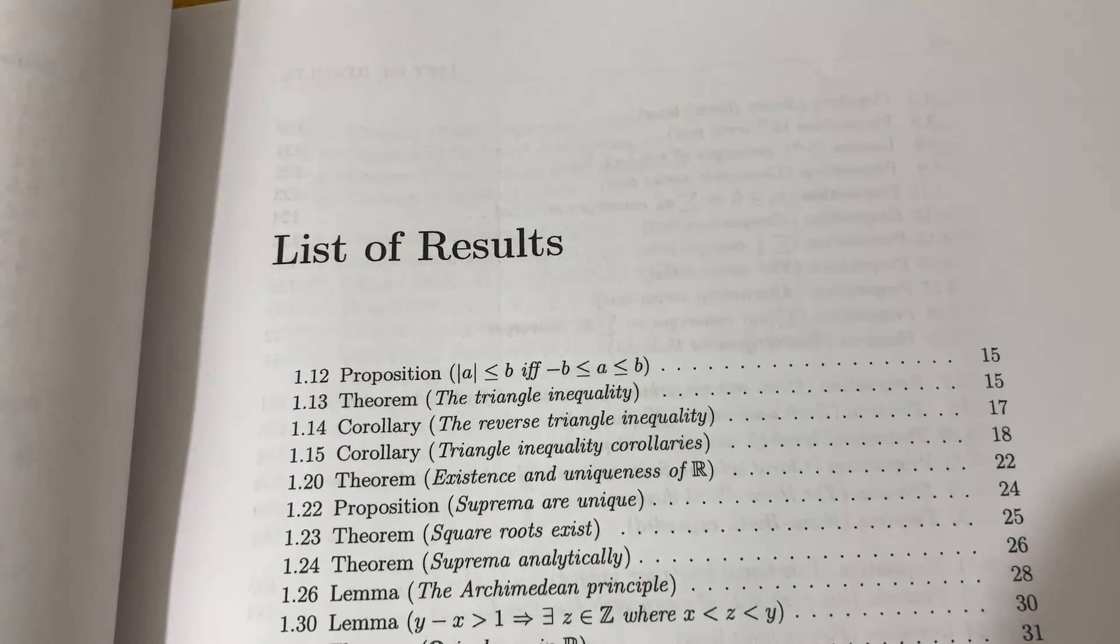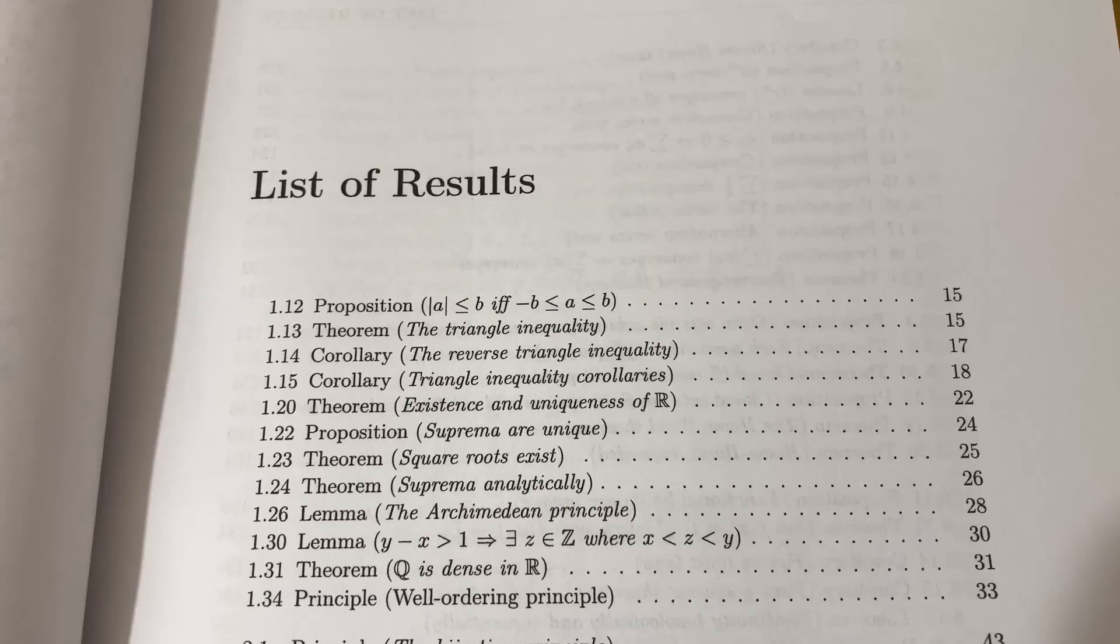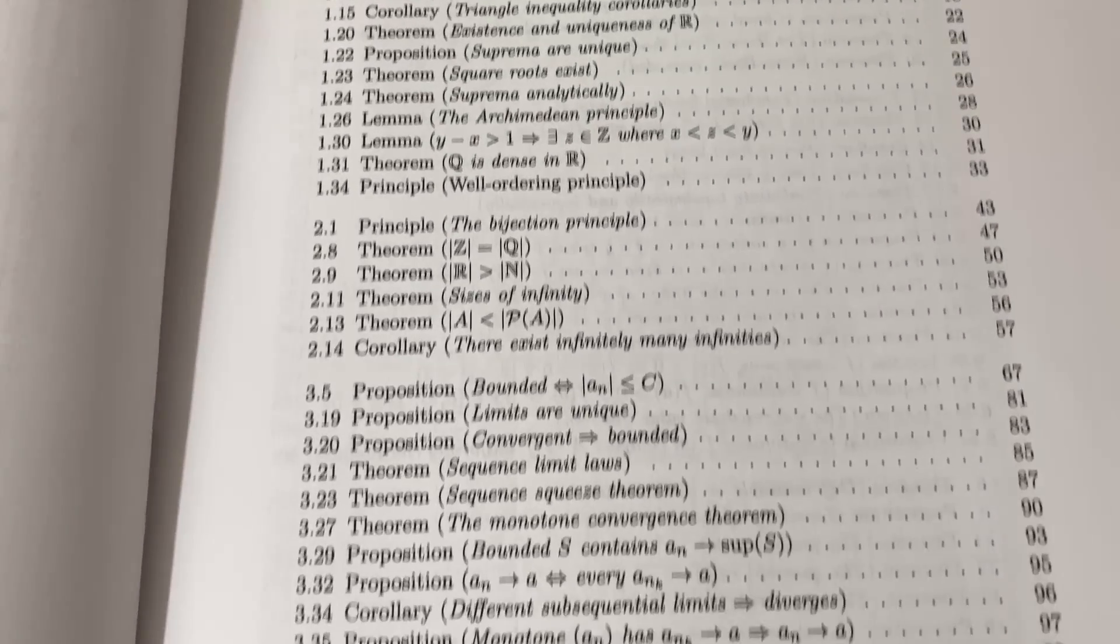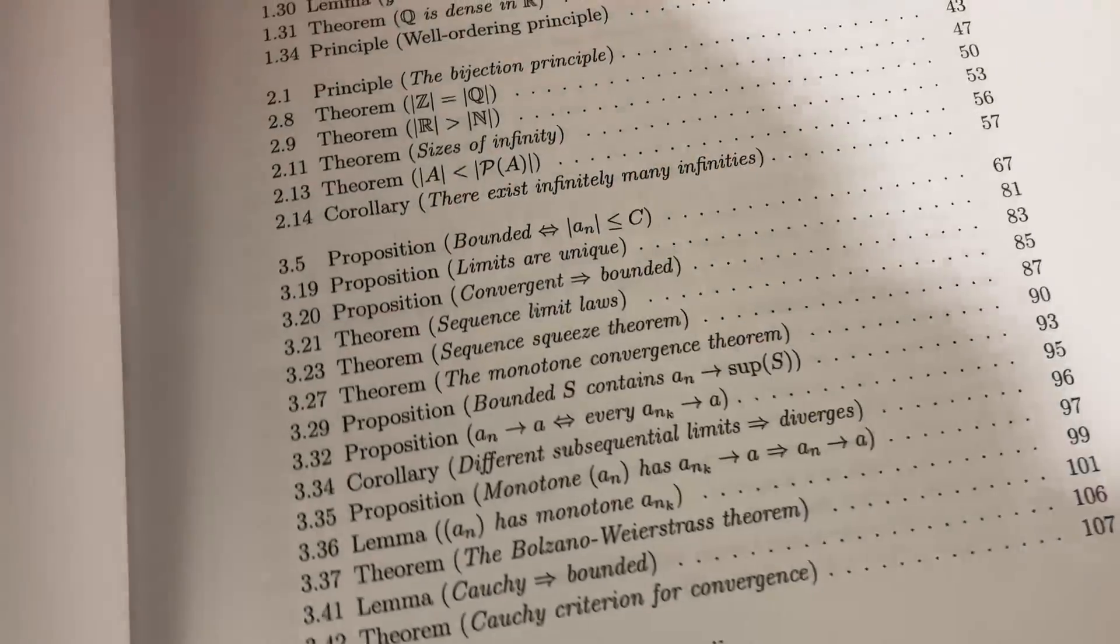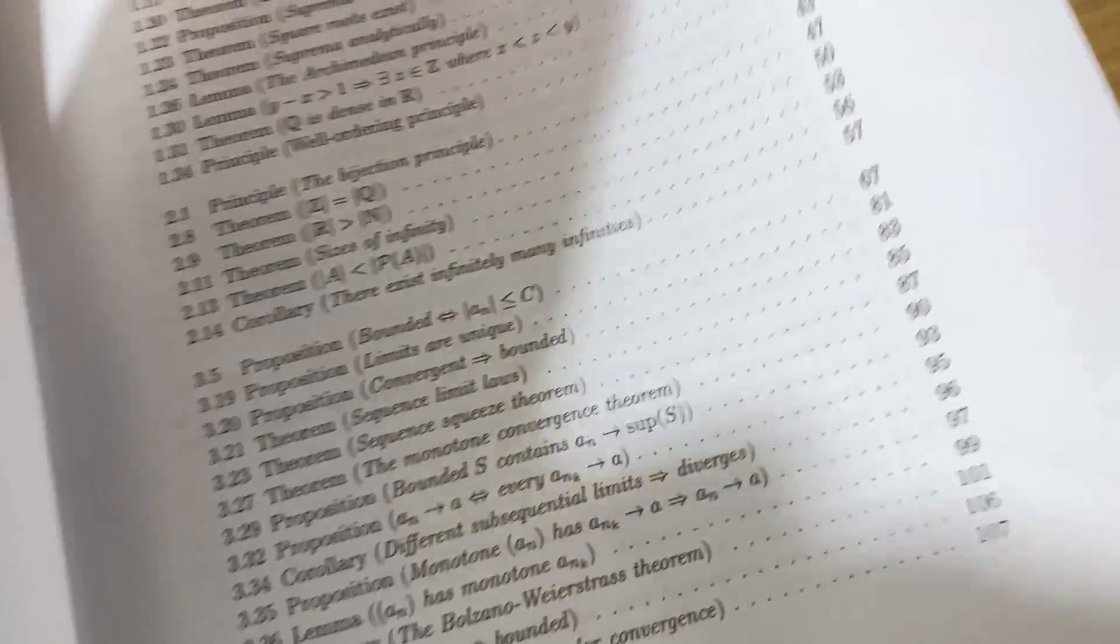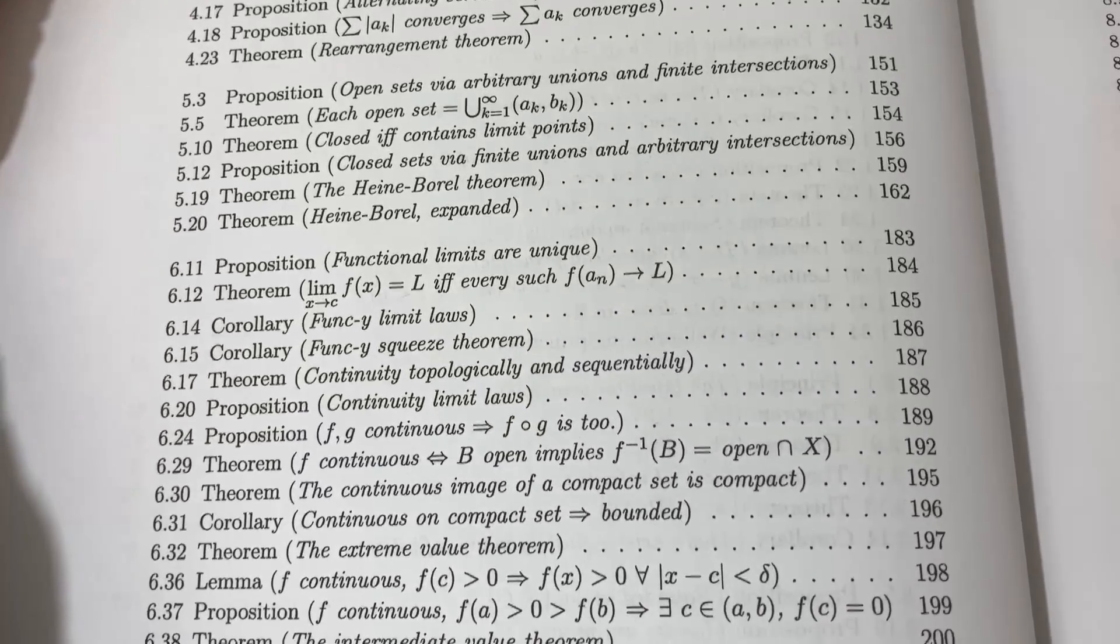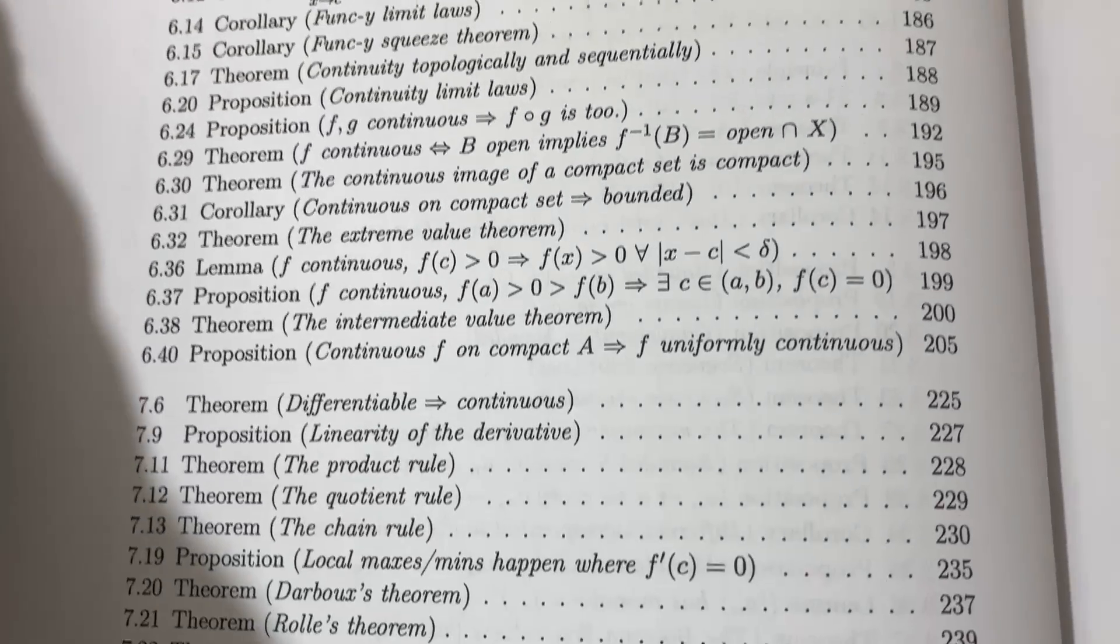And this is something I really, really like. When I saw this, I was really kind of blown away. List of results. So he actually has a list of the results in the textbook. I'm going to turn the page so you can see. And it's kind of cool because you can go through and say, oh, that's something I need to know. Or that's something interesting. And you can find it. It's just nice that he's done this.